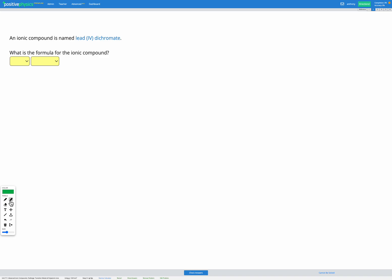In this question we have an ionic compound named lead-4-dichromate. So you can see here we have both a transition metal and a polyatomic ion. And our goal is to find our formula.